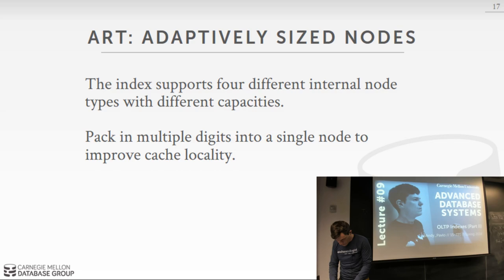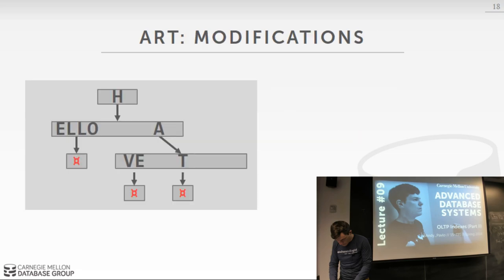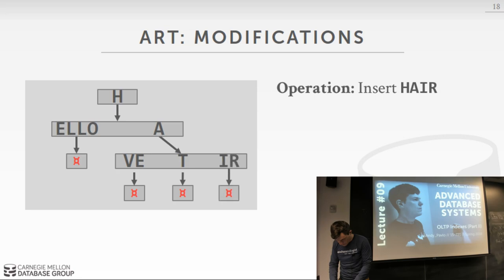In an ART representation of 'hello', 'hat', and 'have', at the second level you have a single contiguous block of memory — one node containing 'ELLO' and 'A', and another node containing 'VE' and 'T'. If I want to insert 'hair', it shares H and A, so I can insert it into the existing node without allocating anything new — I just have space available. If I then delete 'hat' and 'have', ART's rules specify that this is now a single path, so I can collapse it and update just the modified node and its parent — I don't need to traverse all the way up.